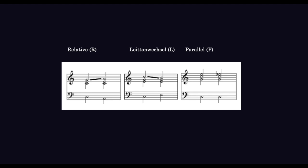The P transformation, also known as the parallel transformation, uses the root and fifth as shared common tones and exchanges the triad to either its major or minor variant. This means C major becomes C minor and C minor becomes C major.